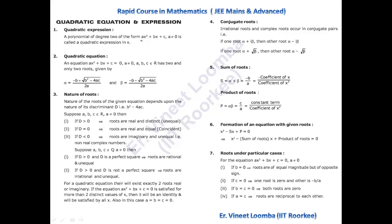An equation of the form ax² + bx + c = 0 is called a quadratic equation, and the highest degree term is 2. A quadratic equation has two roots given by: x = (−b ± √(b² − 4ac)) / 2a. The nature of these roots depends on the discriminant, D = b² − 4ac. If D > 0, the roots are real and distinct (unequal). If D = 0, the roots are real and equal (coincident).